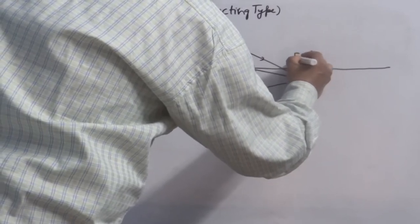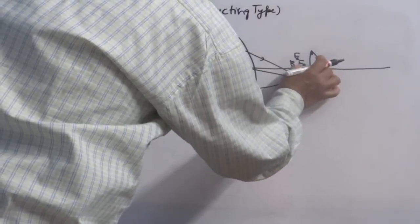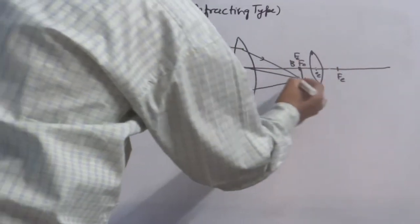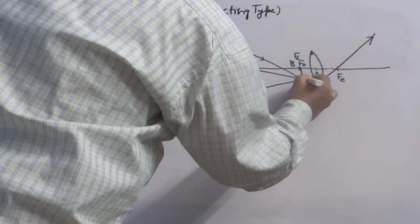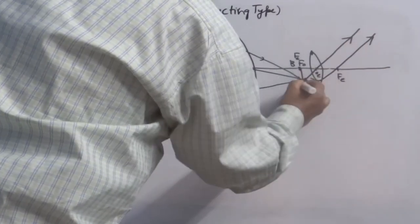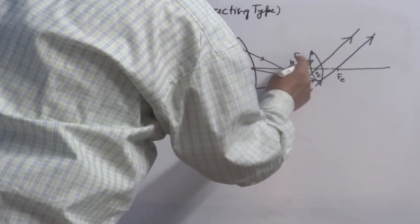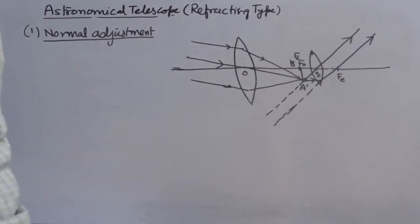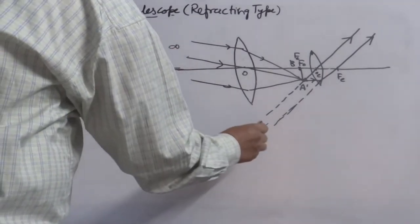The eyepiece lens focal length also coincides with fo. Mark the focal length of the eyepiece lens on the other side of the optical center. Follow the rules: the ray of light coming parallel passes through the focus; the ray of light passing through the optical center moves straight. When you follow the rules and measure distances — these distances are equal — you will automatically obtain parallel rays finally coming out. In the ray diagram, the object is at infinity and the final image is also formed at infinity.